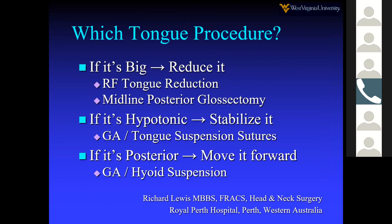For a big tongue, radiofrequency tongue reduction or midline posterior glossectomy can be used to remove tissue. For a hypotonic tongue, genioglossus advancement is an option, though it nearly requires oral surgery training, and tongue suspension suture has also been used. For a posterior tongue, genioglossus advancement and hyoid suspension can move it forward.